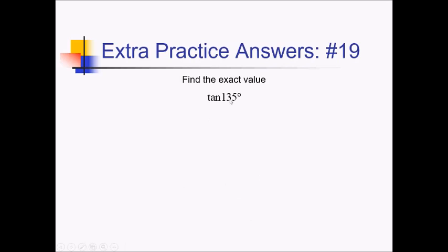To figure out tan of 135, let's write this with a reference angle. 135 is 45 degrees away from the x-axis angle of 180, so that's our reference angle — 45 degrees. Tangent in quadrant 2 has a negative value because our slope in quadrant 2 is negative. So we can rewrite this as negative tan of 45 degrees. Tan of 45 is just 1 — that's one of those special values to memorize. So this is going to be negative 1.